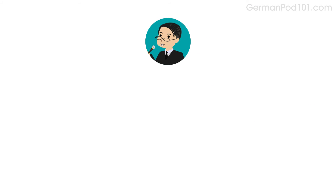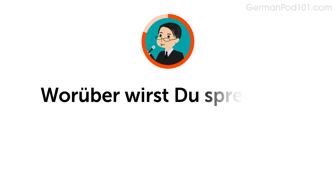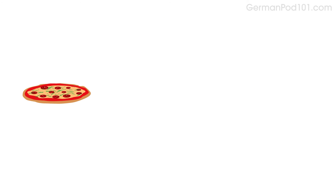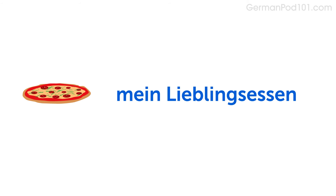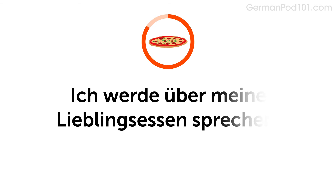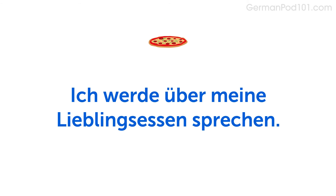Okay, now it's your turn. Do you remember how to say: What are you going to talk about? Worüber wirst du sprechen? Imagine you're going to talk about your favorite food. Do you remember how to say: my favorite foods? Mein Lieblingsessen. Say: I'm going to talk about my favorite foods. Ich werde über mein Lieblingsessen sprechen.